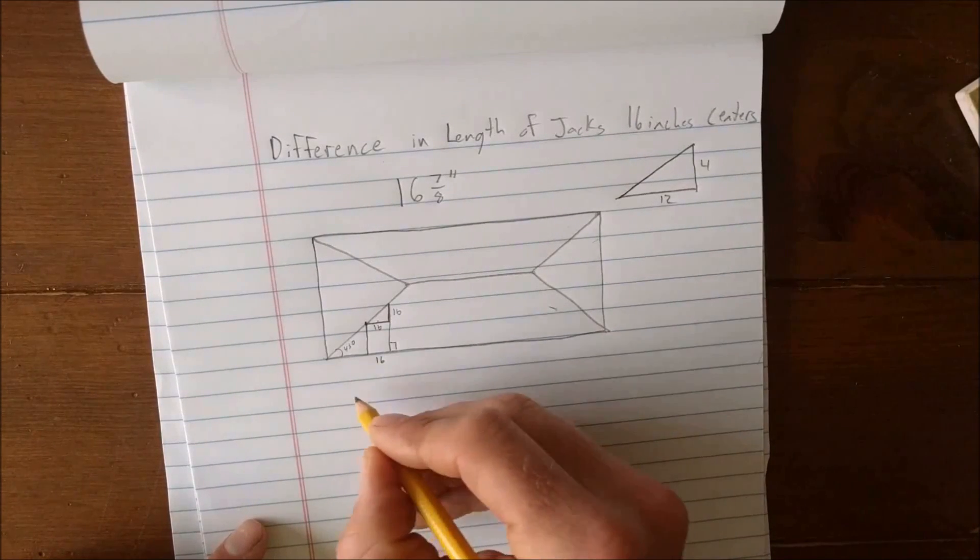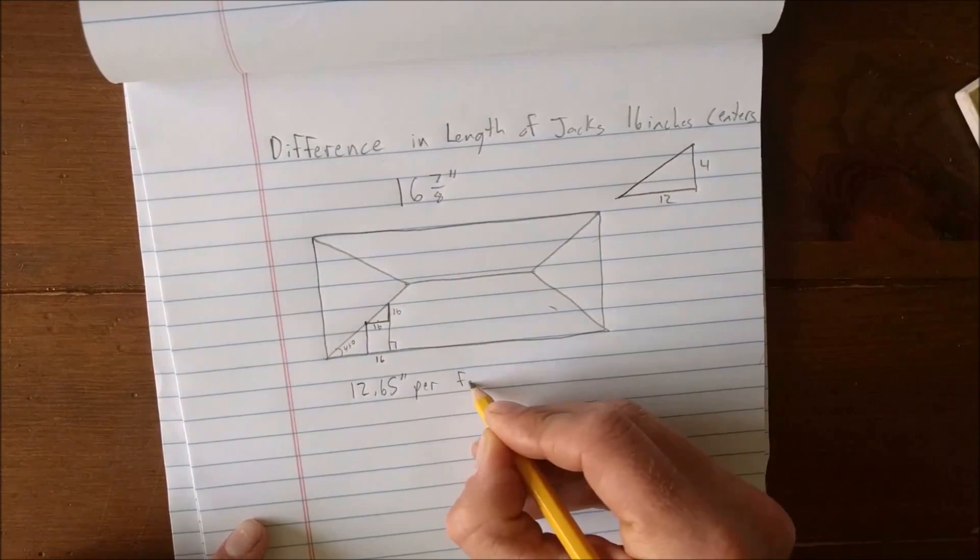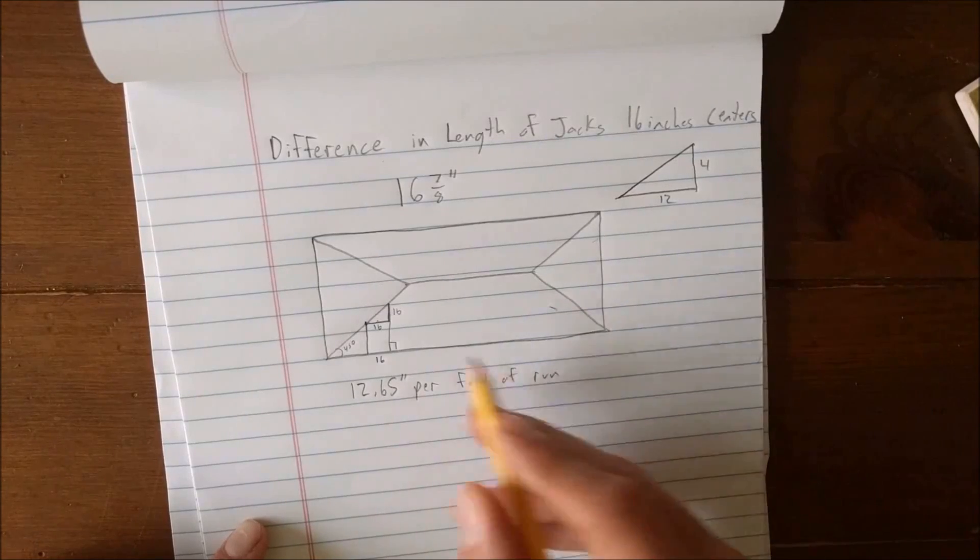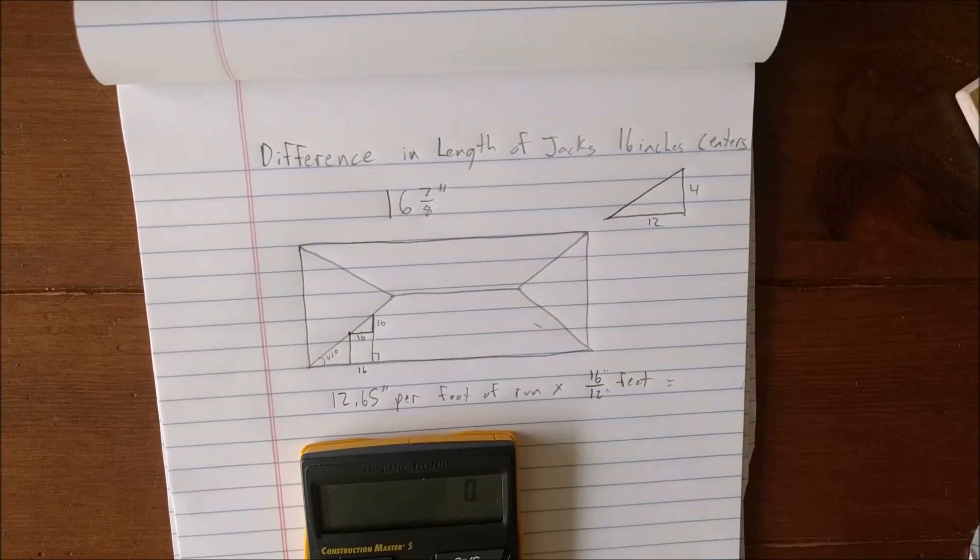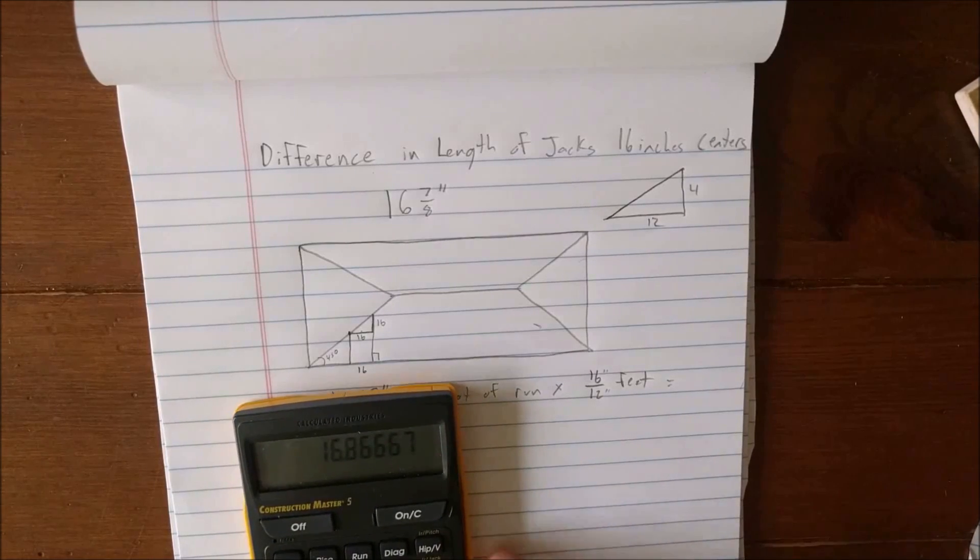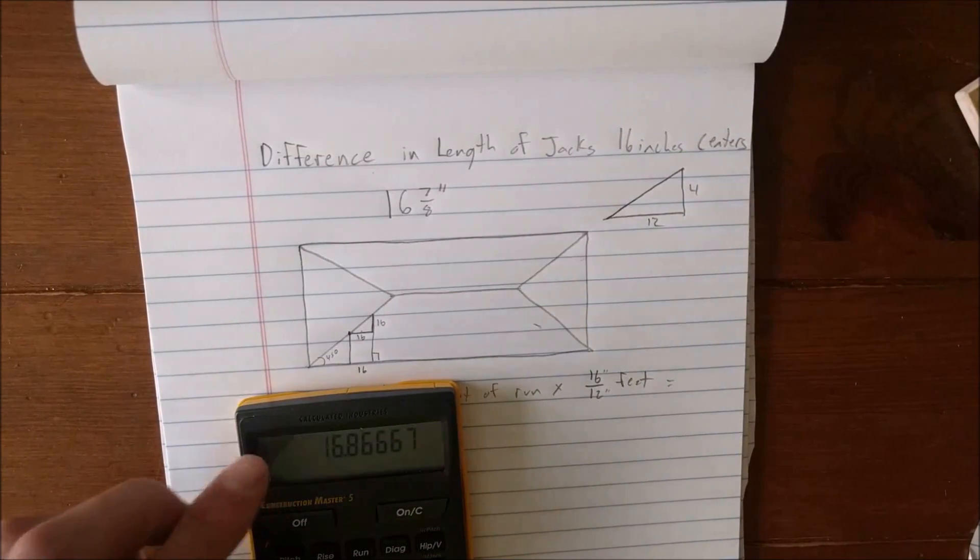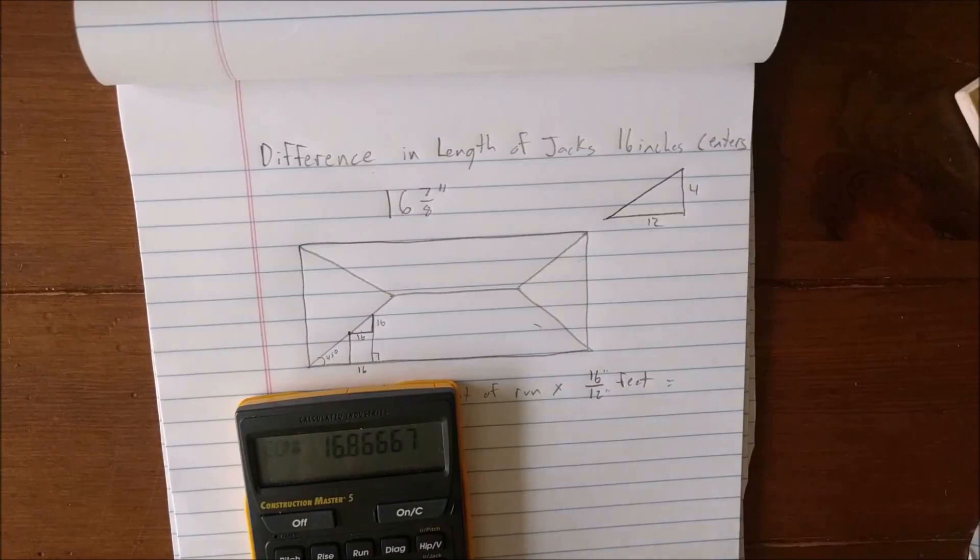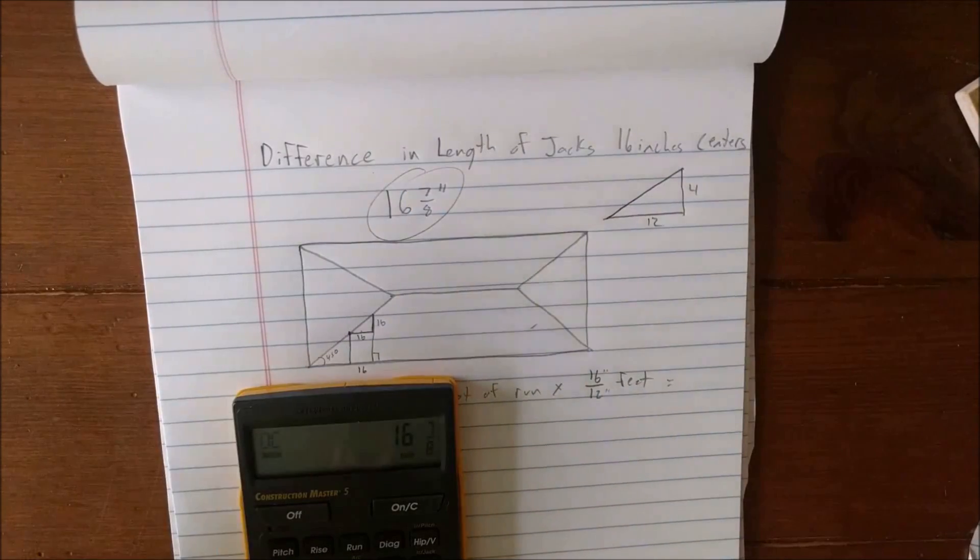The first line in the framing square gave us 12.65 inches of common rafter per foot of run. So we need 16 inches in feet, so that's 16 divided by 12. That's 12.65 times 16 divided by 12, and that gives us 16.866. It would round to 16.87. I'm going to use a fancy feature of this calculator to convert this number to the nearest 16th of an inch. 16 and 7 eighths is the nearest 16th. So we've matched our number.